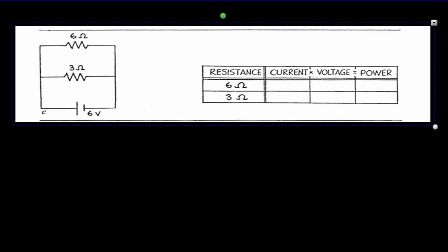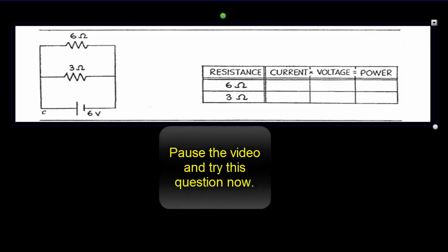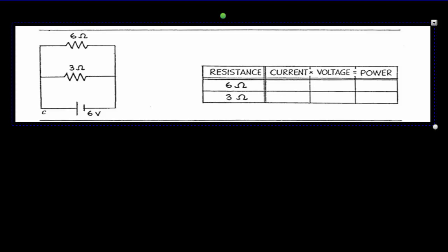Let's try another RIV table - this time for a parallel circuit. Pause the video, try this question, then come back for the answer. The voltage has to be 6 volts across both resistors because they're both in parallel. That means we know two out of the three columns, so we can figure out the third: voltage divided by resistance is current. Six divided by 6 gives 1 amp; 6 divided by 3 gives 2 amps. For the powers: 6 times 1 is 6 watts, and 6 times 2 is 12 watts.